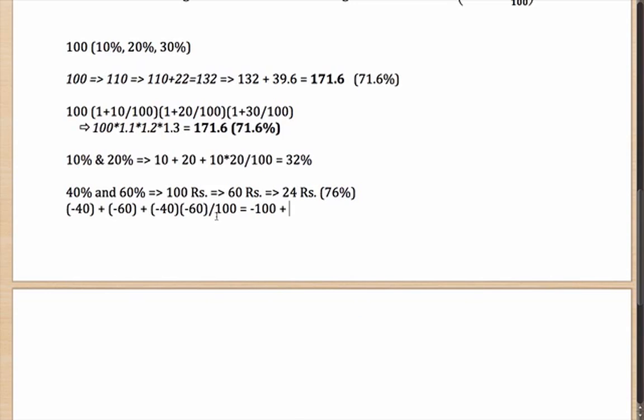Then, minus 40 into minus 60 is 2400 by 100 or 24, which gives you minus 76. Minus 76 percent is your discount, which you had got by the original value also above.